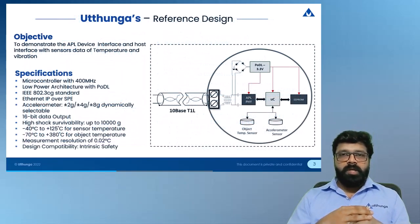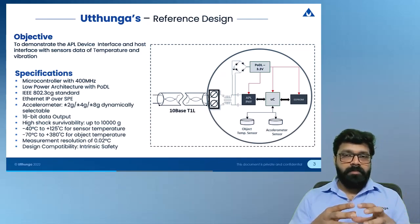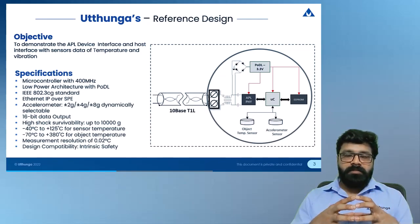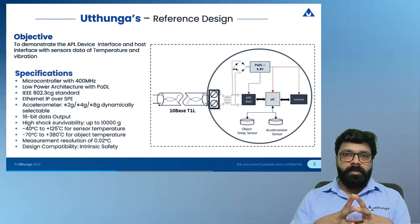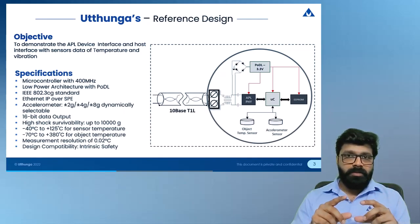This is Utunga's reference design for Ethernet APL, compatible for power over data line. It communicates with an Ethernet APL switch or any adapter connecting from Ethernet APL to standard Ethernet running HART IP or other communication modules. The microcontroller is capable of clocking up to 400 MHz, supports RTOS, and the entire system is designed in a low power architecture with various shutdown features for multiple sensors and IO interfaces.